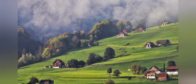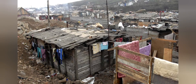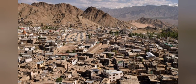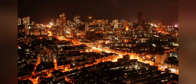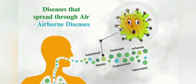I have tried to cover most of the chapter on health and organization. The first picture shown is remote areas, the second is slum dwellings, the third is a small town, the fourth is villages, and the fifth is big cities of India. Diseases that spread through air are called airborne diseases.